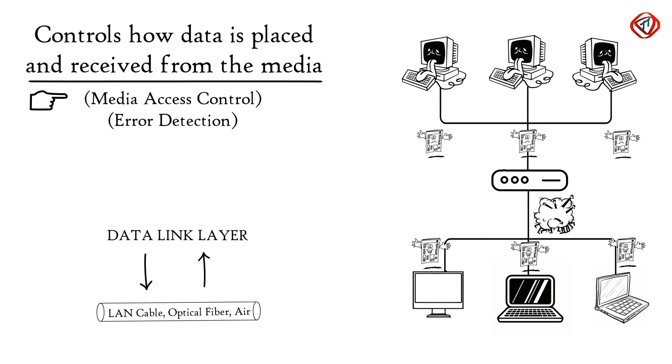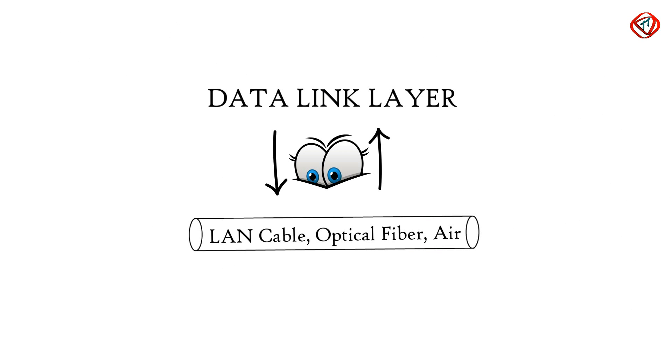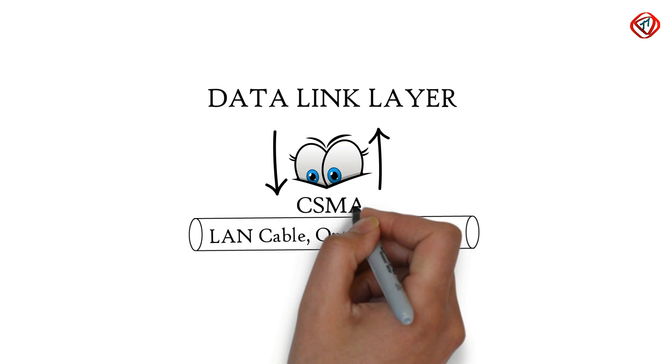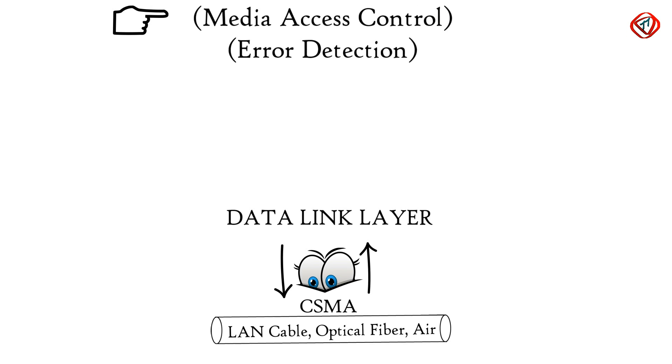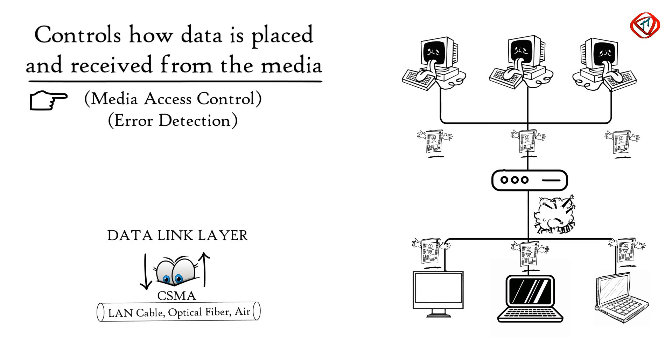To avoid these situations, data link layer keeps an eye on when the shared media is free so that device can transmit data for the receiver. This is called carrier sense multiple access. So data link layer with its media access control methods controls data transmission.